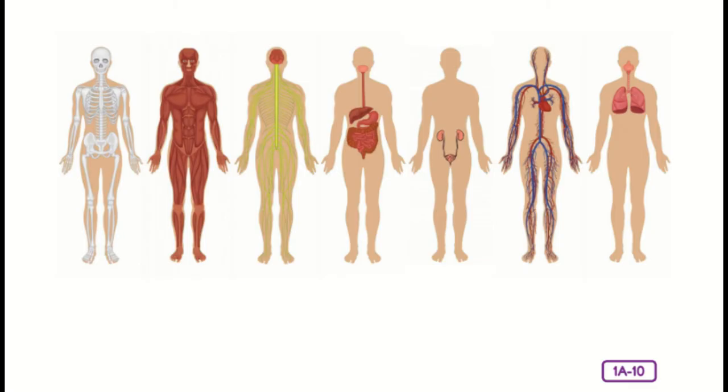Well, everybody, you've identified seven of the body's systems. Let's see if you can name all seven with me. Muscular, sorry, skeletal, muscular, nervous, digestive, excretory, circulatory, and respiratory. Now, it's time to find out what all these systems have in common.